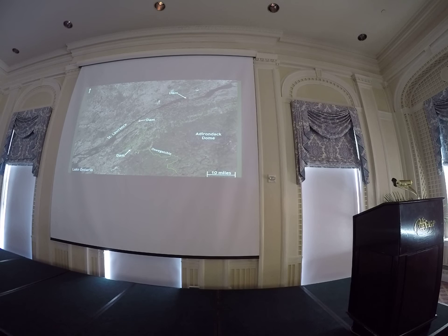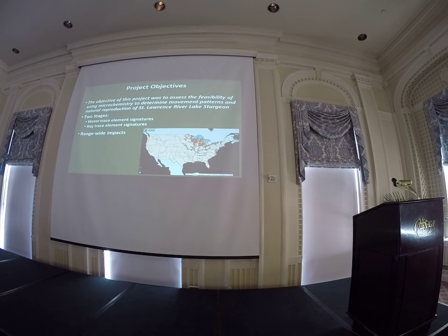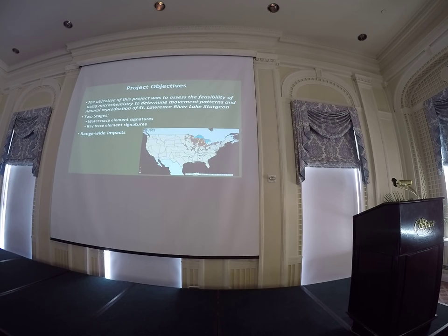The St. Lawrence River has the Moses Saunders Power Dam, which impeded most fish movement downstream. So you might expect that the majority of fish captured below Moses Saunders would probably be wild. However, we're really unsure of what's going on in the Oswegachi River. The objective of this study was to assess if microchemical analyses of fin rays from lake sturgeon is feasible to help determine sources of recruitment — whether these fish are wild or stocked — and additionally, where these fish are spawning.